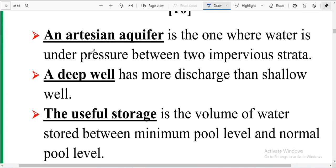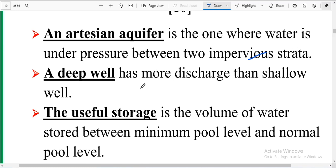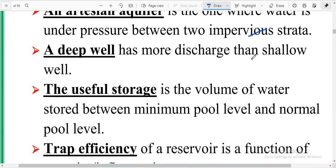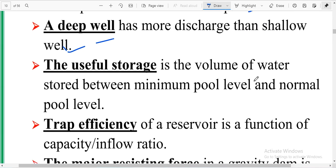Artesian aquifer is the one where water is under pressure between two impervious strata. A deep well has more discharge than shallow wells. Useful storage is the volume of water stored between the minimum pool and the normal pool.